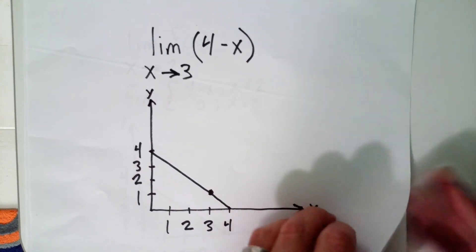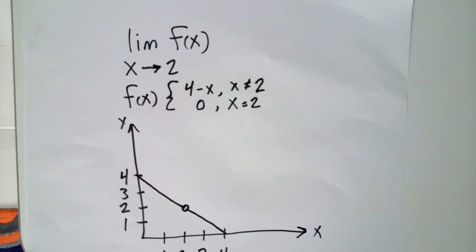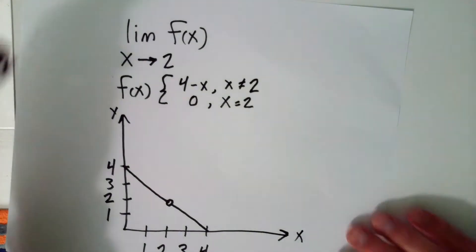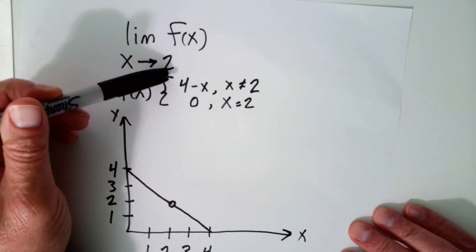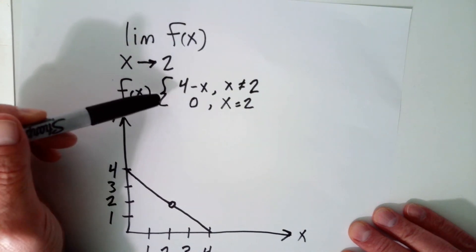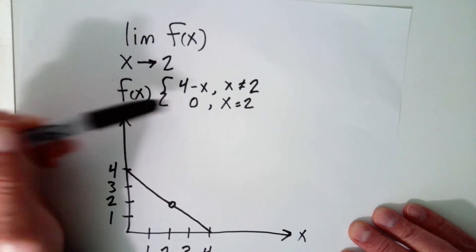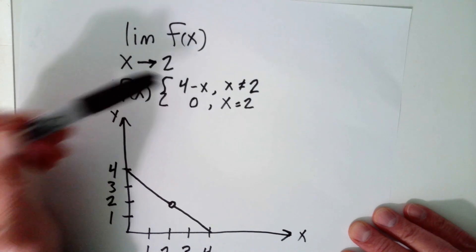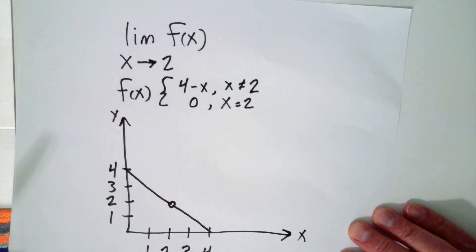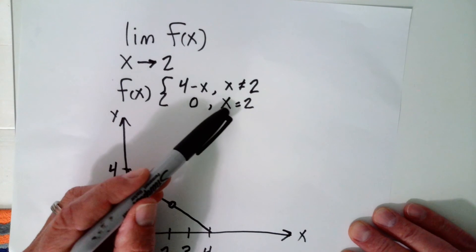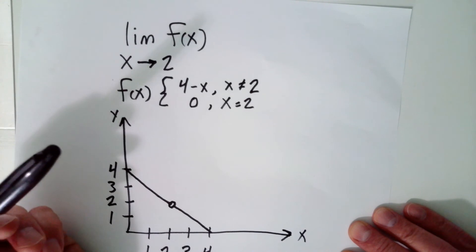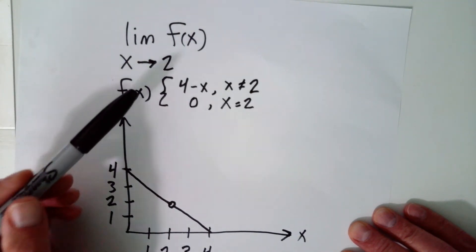This next one is a little bit nonsensical, but it shows you better why we need the concept of the limit. Here we have the limit of a function f of x as x approaches 2. What is f of x? It's defined right here — all this symbolism is just defining f of x. So f of x is defined in a really weird way: for all x's not equal to 2, f of x is 4 minus x, the same thing we just looked at. But if x equals 2, then f of x is defined as 0.